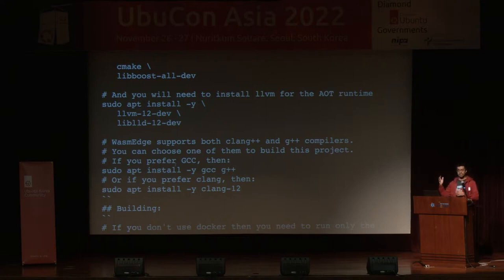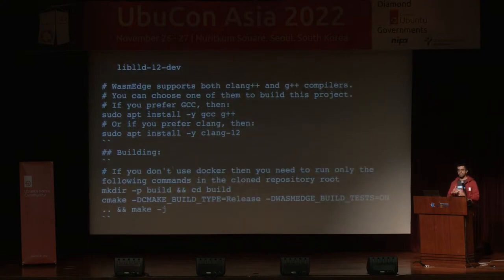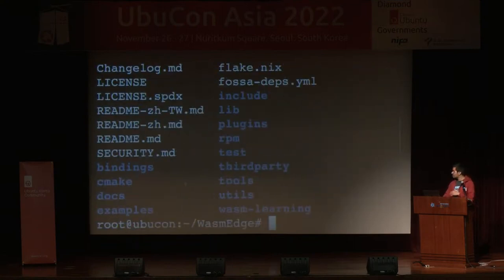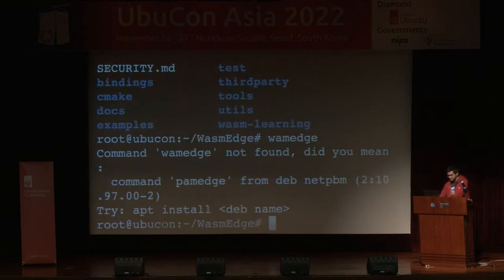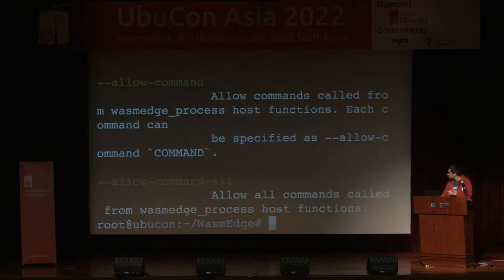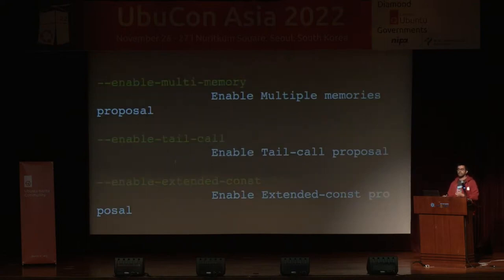Since the WasmEdge project is written in C++, some dependencies are primarily for building and managing C++ applications. If you're not using Docker, these are the commands to build your WasmEdge applications. Following these steps, you'll finally be able to get the WasmEdge command. I've already installed it — it's 'wasmedge'. The WasmEdge toolkit allows you to go ahead and run and compile your WebAssembly applications.